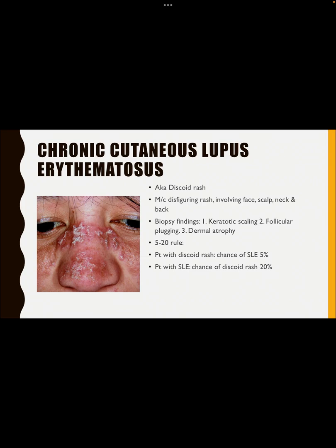CCLE with discoid rash is a pre-malignant lesion and can lead to squamous cell carcinoma of the skin. Remember: the malar rash and subacute cutaneous lupus lesions are not pre-malignant, but the discoid rash in chronic cutaneous LE is pre-malignant. Also, SLE usually does not cause scarring alopecia, but DLE can cause scarring alopecia. These are the most important points about CCLE.